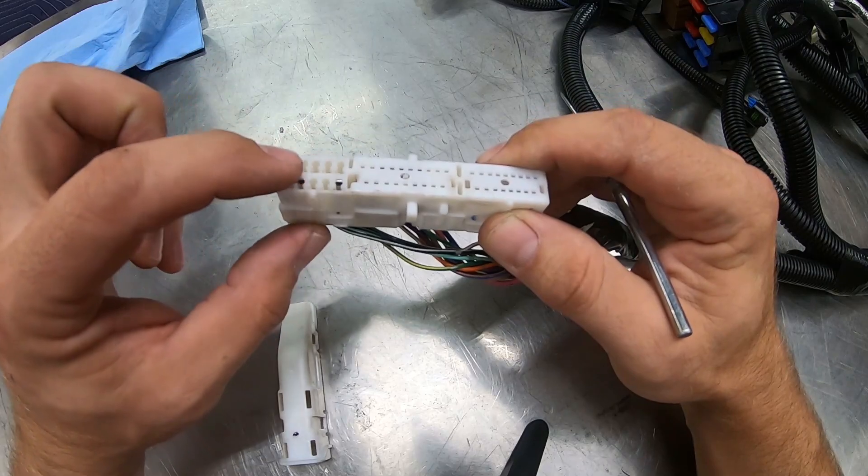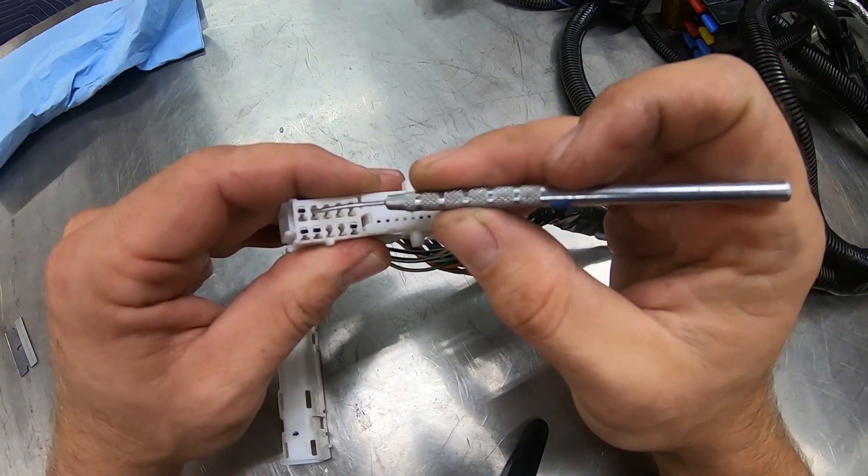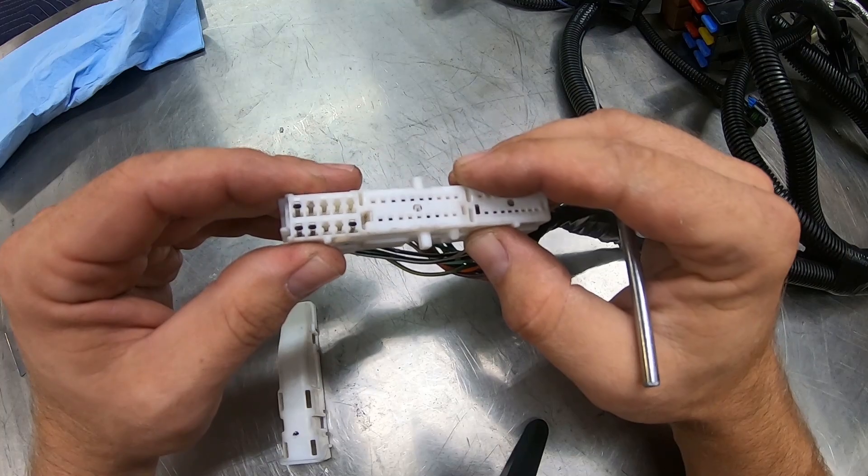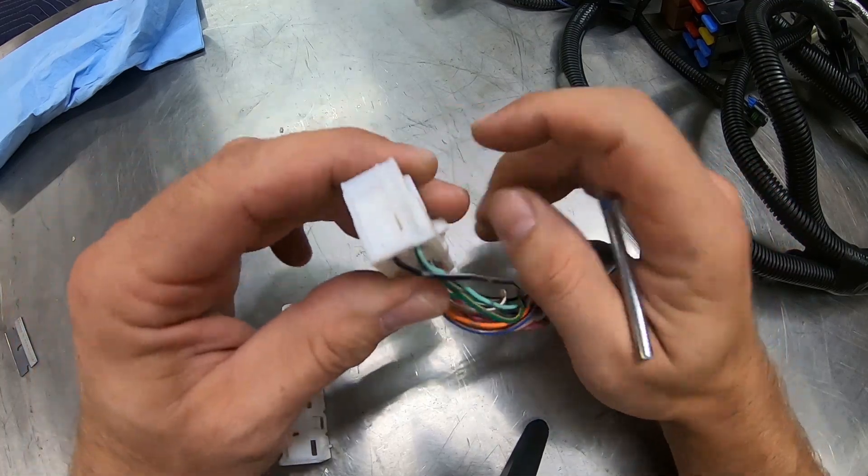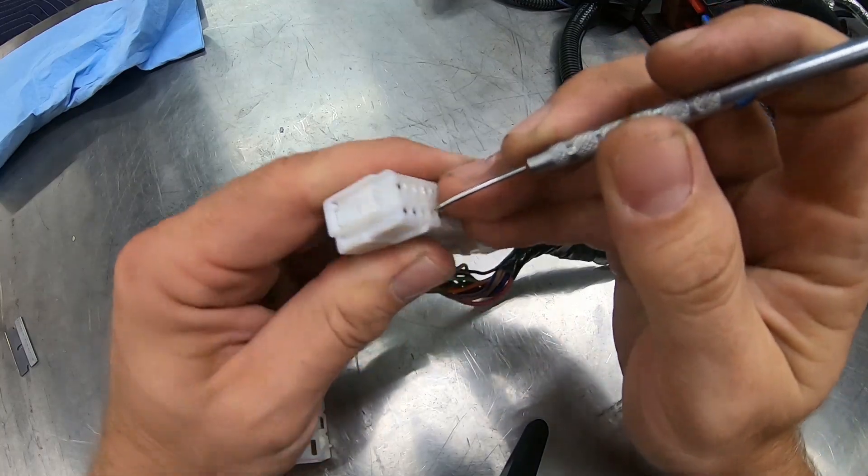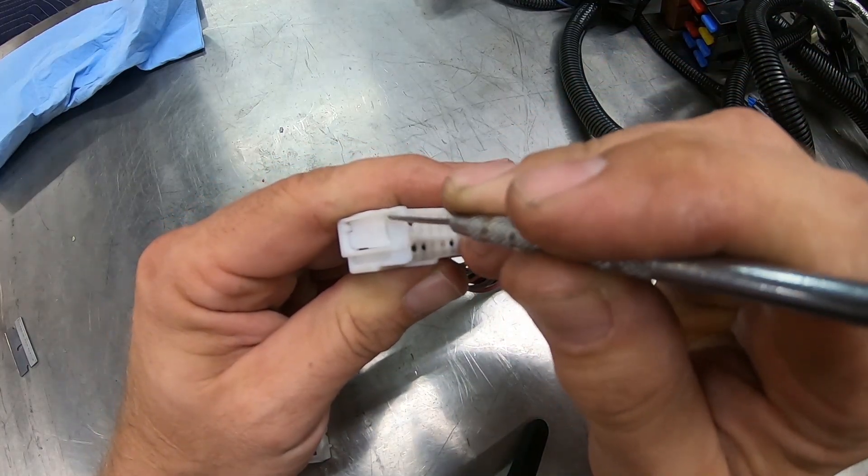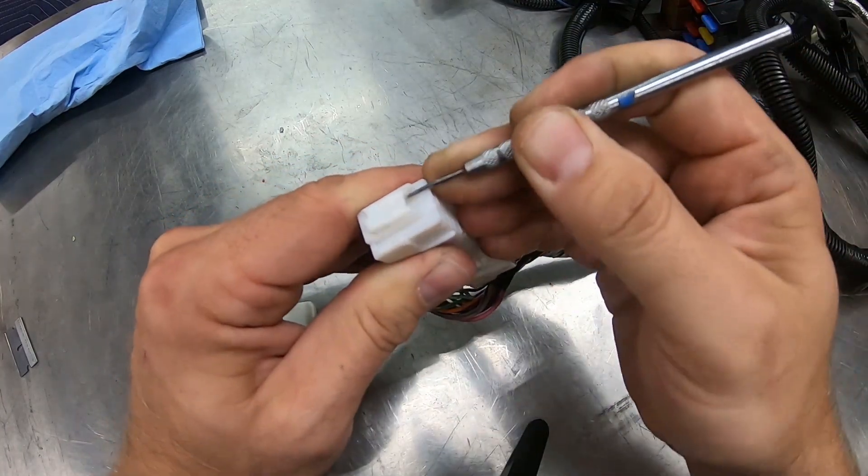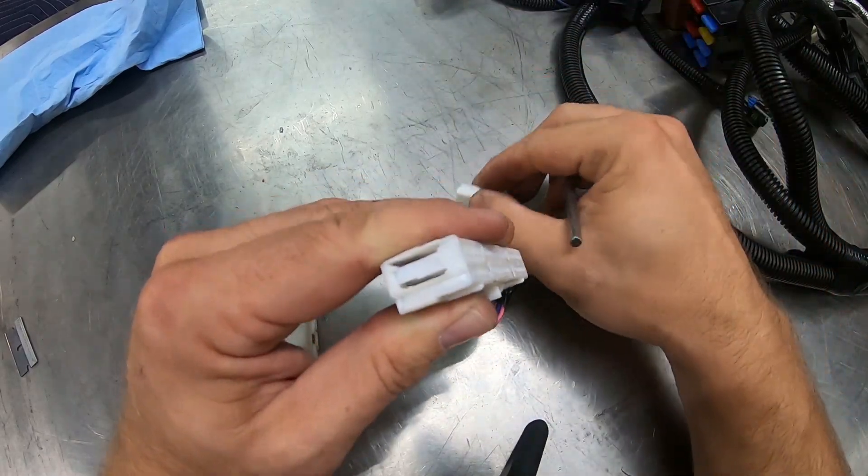In order to de-pin these terminals, you can see on the front side there are some tabs that hold the terminals in, but that is not the only thing you have to do. There's actually a retaining clip on the end and it's a little stealthy the way it's installed, but if you look there's a little groove right here and if you put your pick in, this entire retainer comes out.